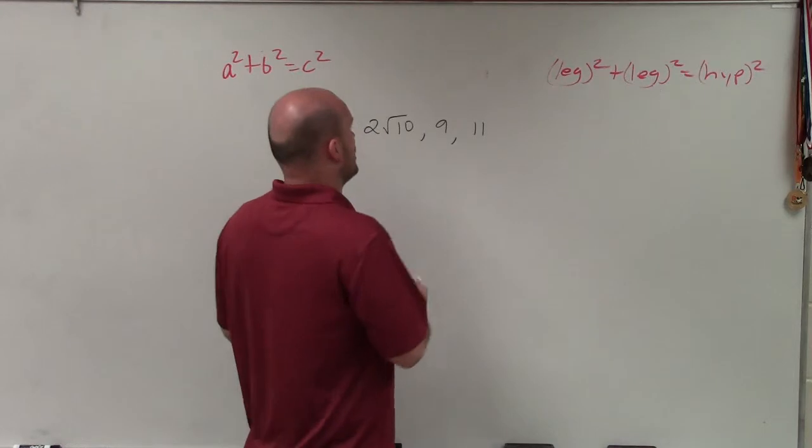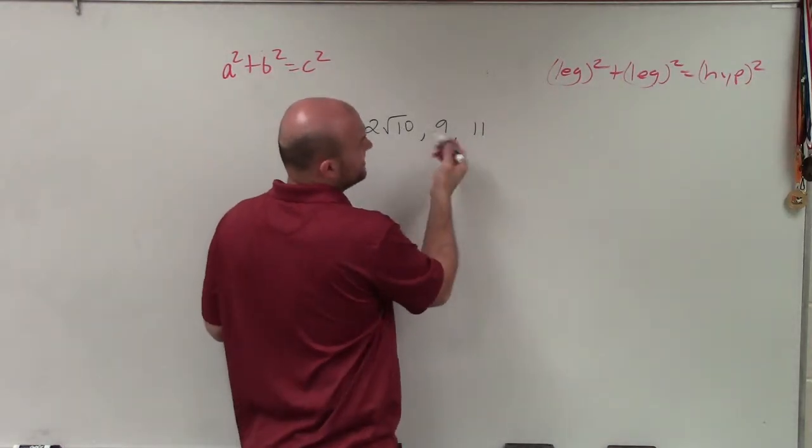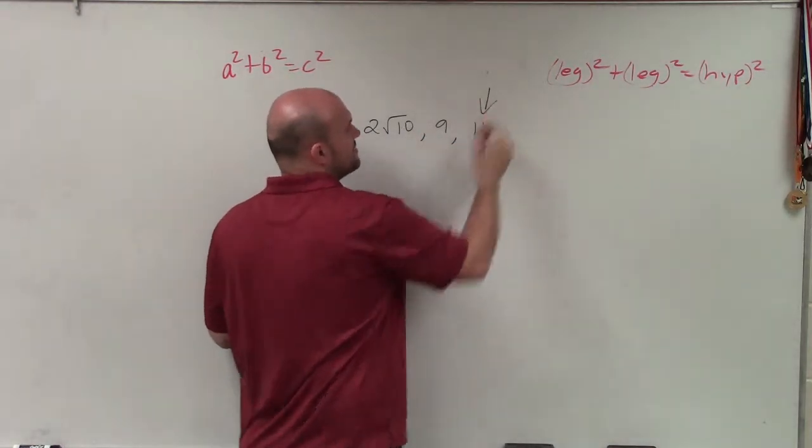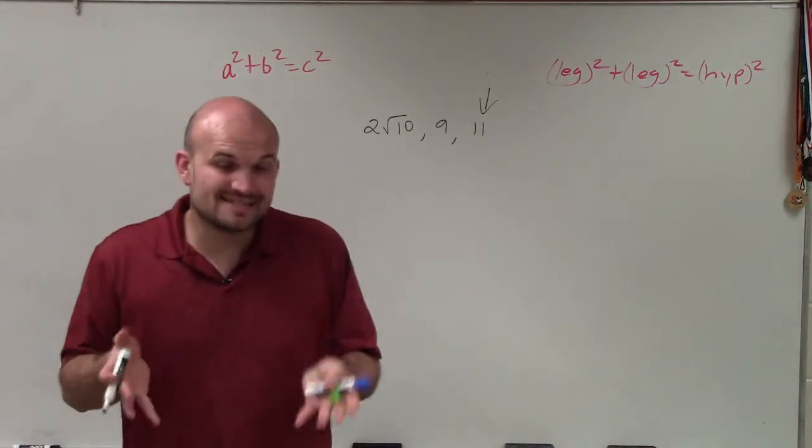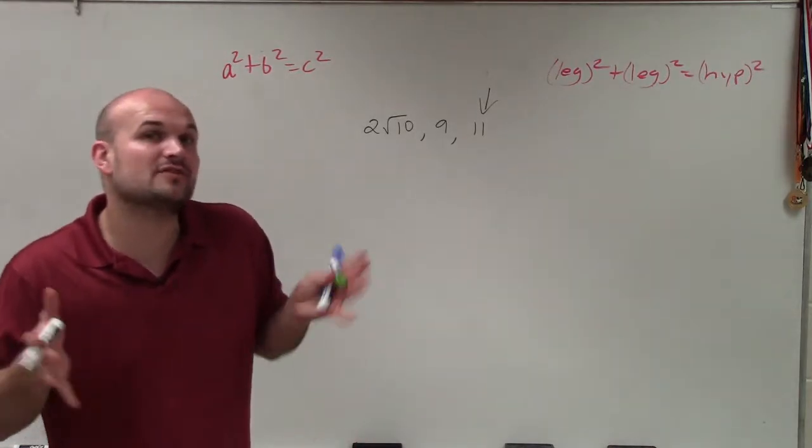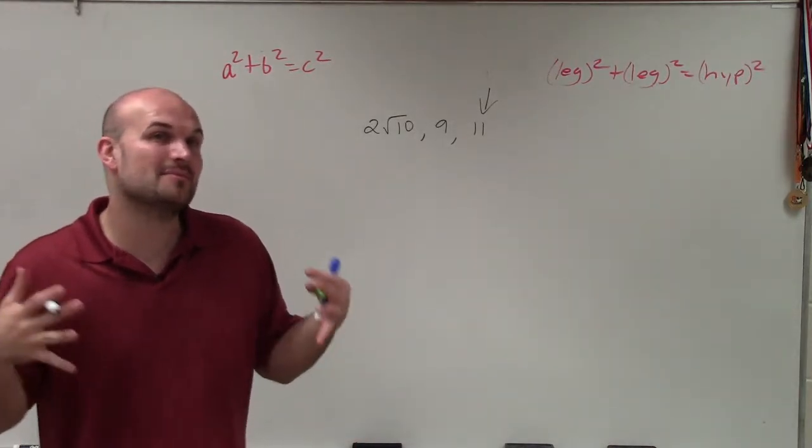We're going to label the largest number as the hypotenuse. Square root of 10 is going to be three and something, so 2 square root of 10 is about six. If these are sides of a right triangle, then the Pythagorean theorem has to work.